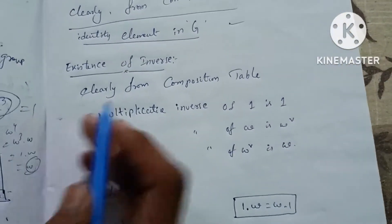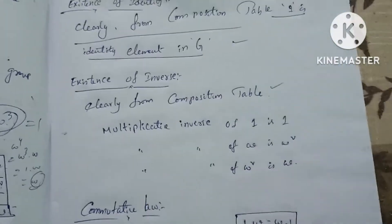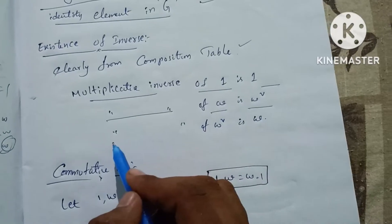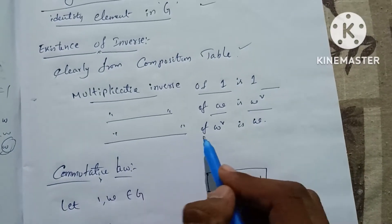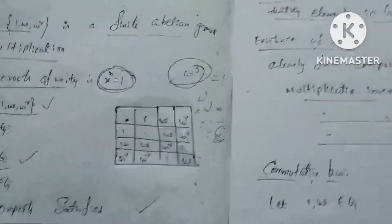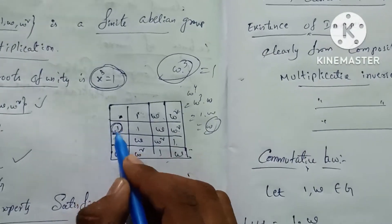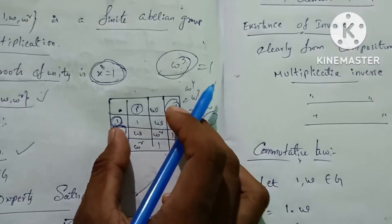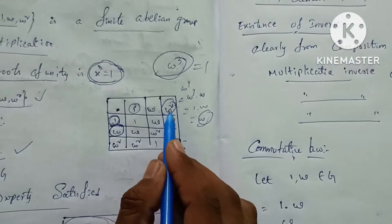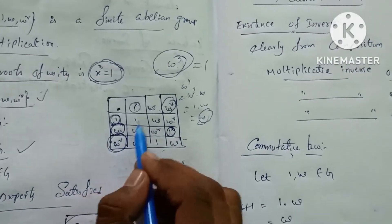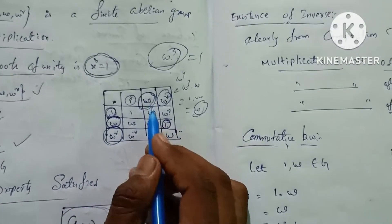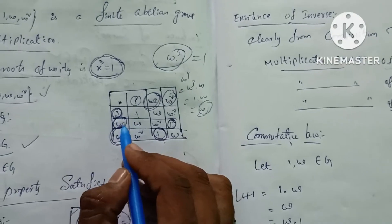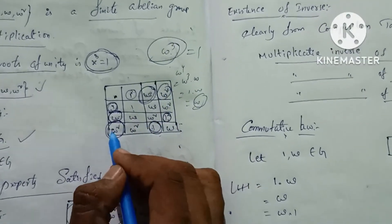The next law is existence of inverse. Clearly, from the composition table, the multiplicative inverse of 1 is 1. The multiplicative inverse of omega is omega squared. The multiplicative inverse of omega squared is omega. We verify: 1 into 1 equals 1, omega into omega squared equals 1, omega squared into omega equals 1. Therefore, every element has an inverse in G.